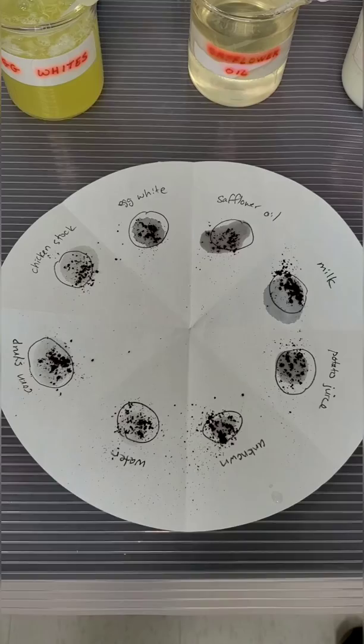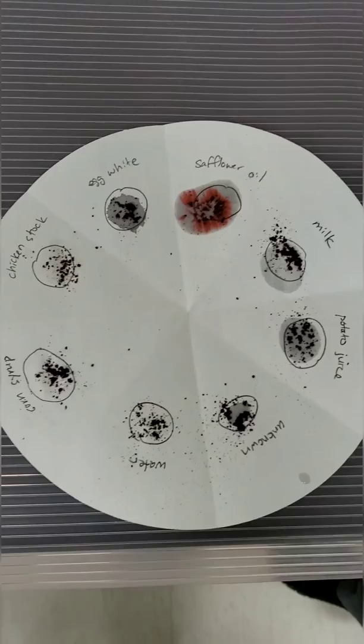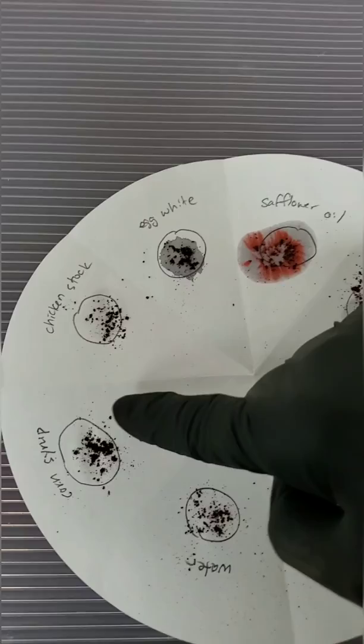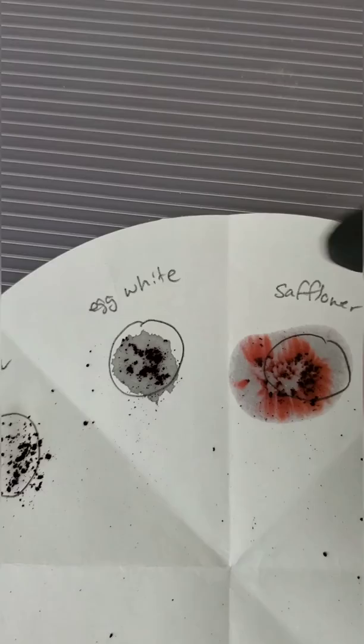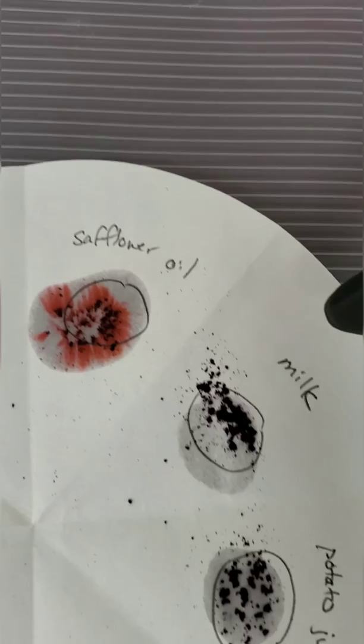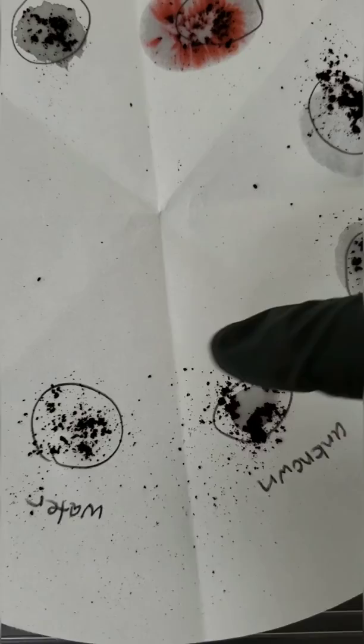All right, last test results. So again, you should have a prediction of what happened, and now we're going to see what actually happened. Our corn syrup stayed black, chicken stock stayed black, egg white stayed black, but no positive test. And we have some milk, and we have some potato juice, and we have some unknown, and we have some water. So really our only test to worry about is the top one.